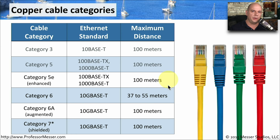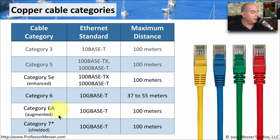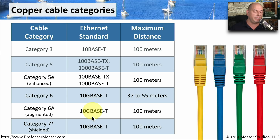When 10 gigabit ethernet over copper cabling was introduced, we needed a new category of cabling, so we created Category 6. Category 6 cabling can support 10GBase-T on distances from 37 to 55 meters maximum. We also created Category 6A, where A stands for augmented. This improved on the standard so that we could still use 10GBase-T but run it a maximum of 100 meters.